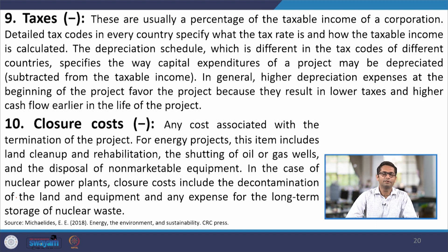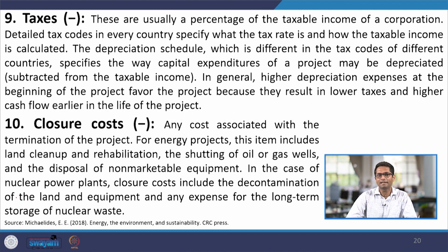Different countries give different kinds of tax credits or incentives to help industries set up, and taxes depend upon individual tax codes which are not uniform throughout the world — there is huge variation in what is taxed, at what rate, and beyond. Then there could be closure costs, which could be positive (called salvage value) or negative (called closure cost). A typical example could be a nuclear power plant, or shutting down an oil or gas well, which involves disposal of non-marketable equipment to a safe location, incurring transportation and dismantling costs.